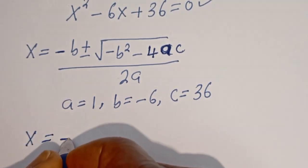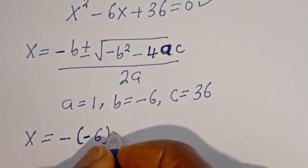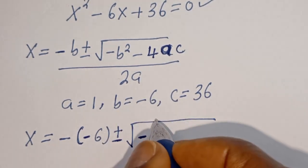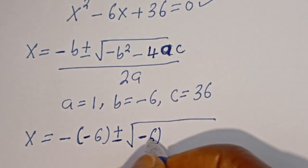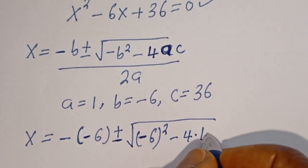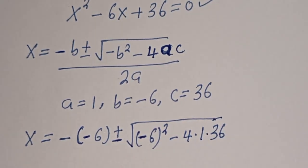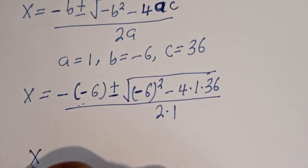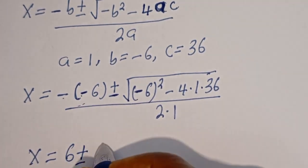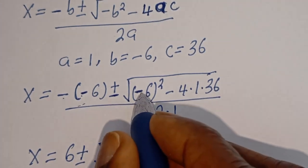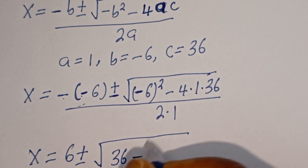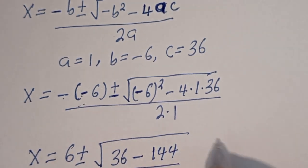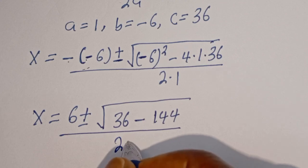So s is equal to negative bracket negative 6, plus or minus square root of negative 6 squared minus 4 multiplied by 1 multiplied by 36, divided by 2 multiplied by 1. That simplifies to s equals 6 plus or minus square root of 36 minus 144, divided by 2.